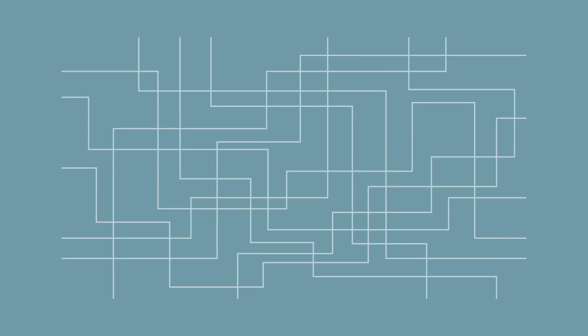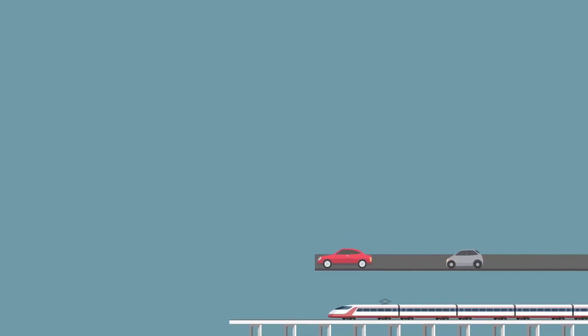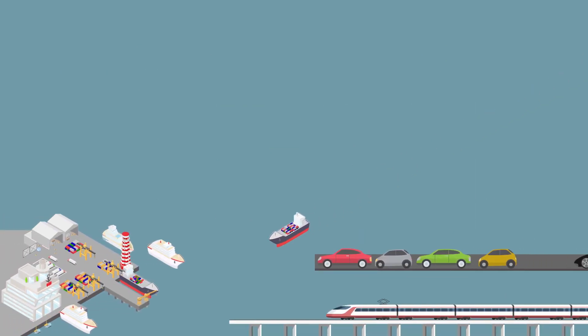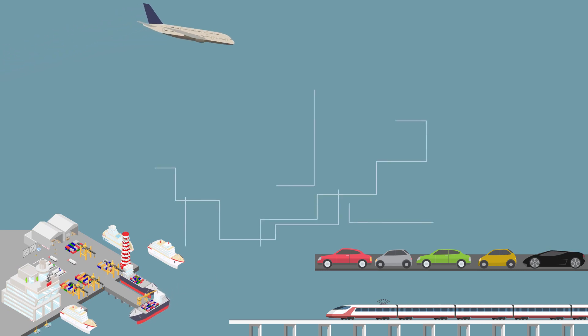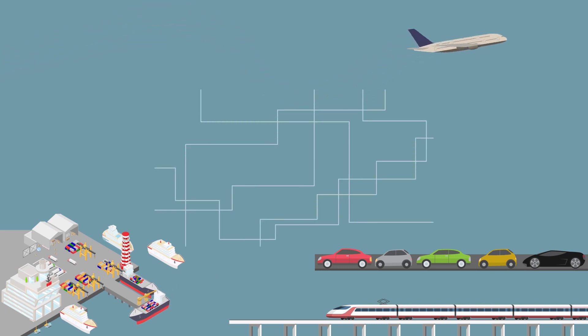Infrastructure is the set of facilities and systems that serve a certain area. Examples of such connections are roads, railways, rivers and canals, ports, airports, but also the electrical grids, the internet, and pipes for water supply and sewage, for example.